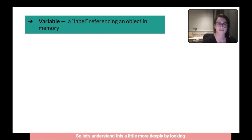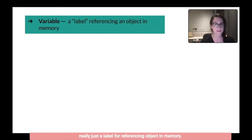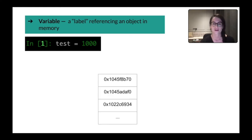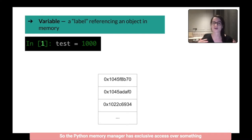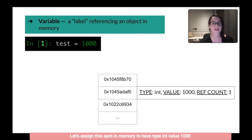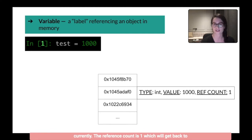Let's understand this more deeply by looking at what happens when you create a variable. A variable is really just a label for referencing an object in memory. Say I want to create a variable called 'test' and assign it the value of 1000. The Python memory manager has exclusive access over something called a private heap — a section of memory exclusively for Python's use. The memory manager assigns that spot in memory to have type int, value 1000. Currently, the reference count is one.